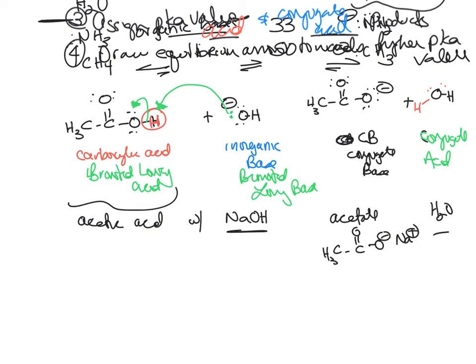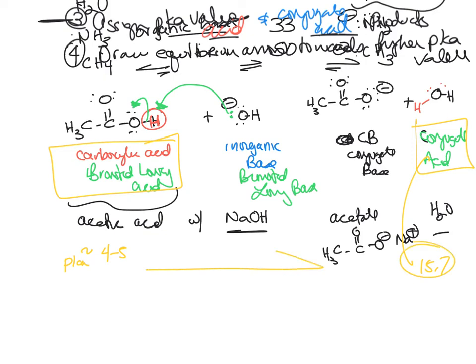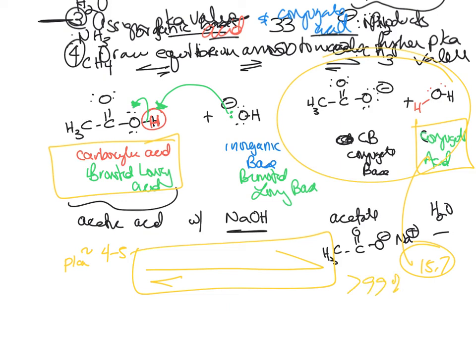So what does the equilibrium look like? Remember, you assign your pKa value to your acid and your conjugate acid. The pKa value of acetic acid is between four and five. The pKa value of water is 15.7. Which one is larger? 15.7 — so your equilibrium value is going towards the 15.7. You can see that if you mix these together, after a few minutes this would be the majority of your product, probably greater than 99%, because of the equilibrium value.